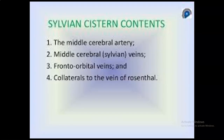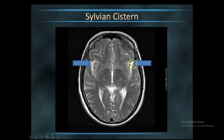The sylvian cistern contains the middle cerebral artery, the middle cerebral vein, the superficial and deep frontoparietal veins, and collaterals to the basal vein of Rosenthal. The most important contents are the middle cerebral artery and middle cerebral veins. The floor of the sylvian cistern is the insula.